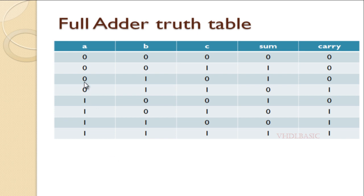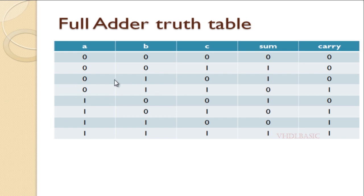If you see these four boxes where all the bits are 0, with respect to this, if you see sum, it is same as c. If you see the carry, it will be always 0.